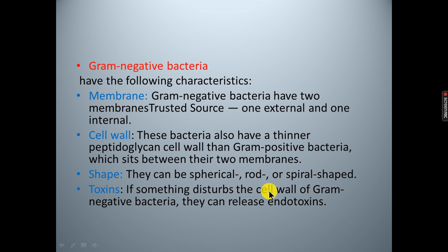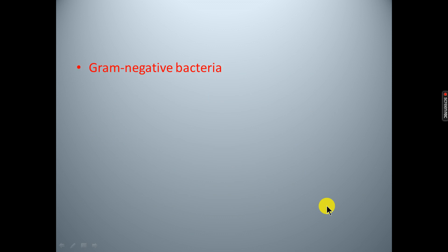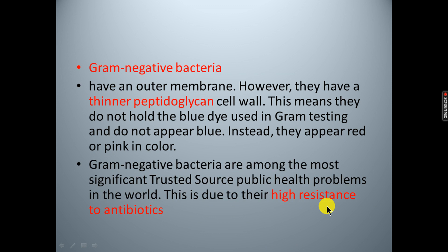If something destroys the cell wall of gram negative bacteria, they can release endotoxins. Gram negative bacteria have an outer membrane; however, they have a thinner peptidoglycan cell wall. This means that they do not hold the dye used in gram testing.